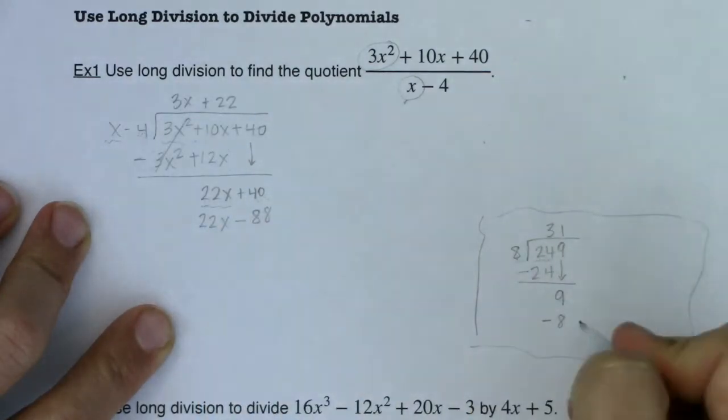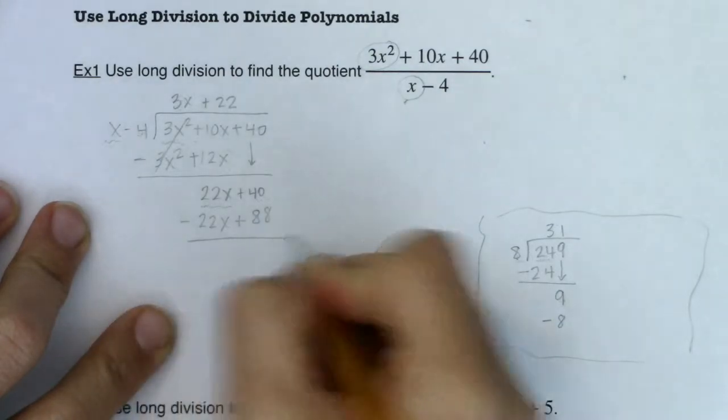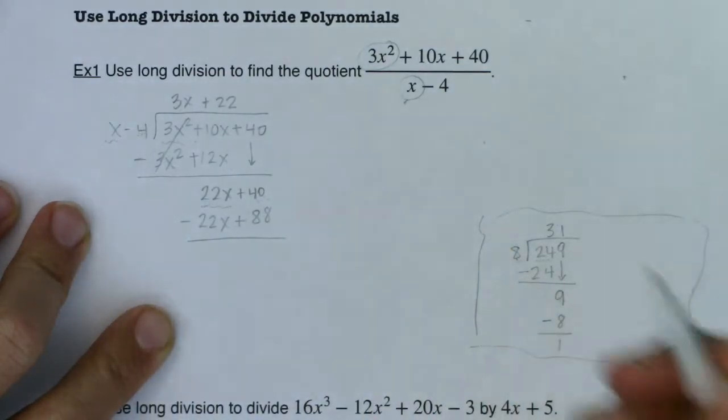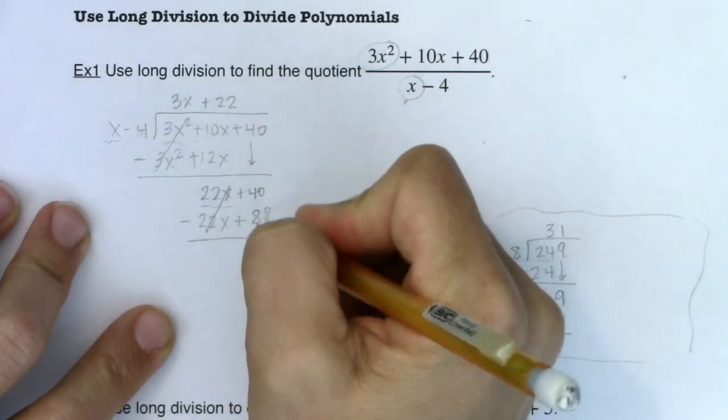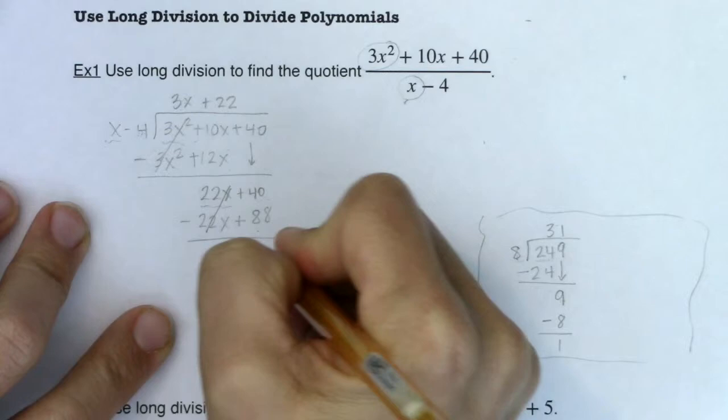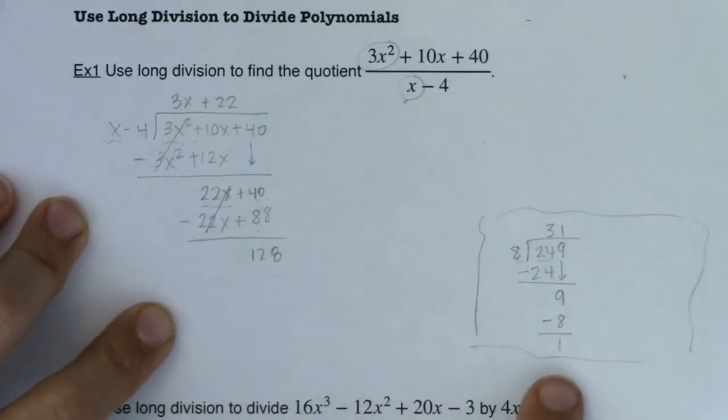Again, I would subtract the 8. So I'm going to subtract the binomial. I'm going to have a remainder of 1 here. And let's see what we have. These cancel. 40 plus 88 is 128. And that is my remainder, just like 1 is my remainder here.